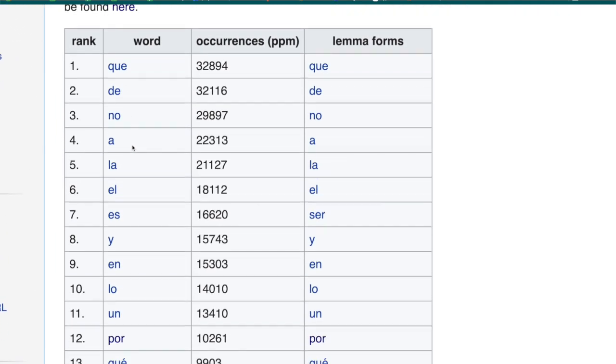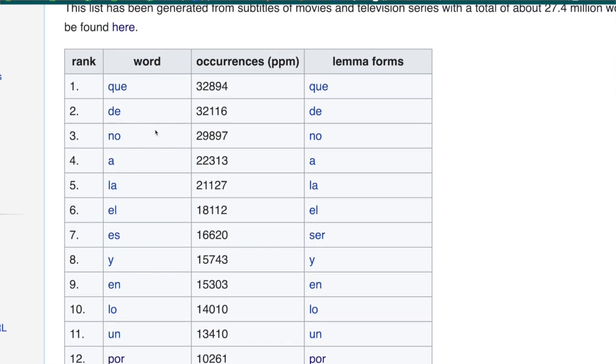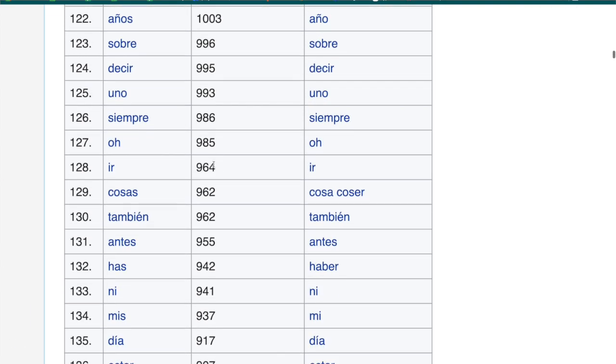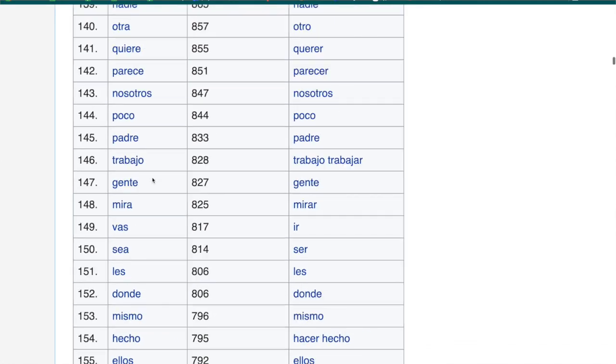If you Google Spanish frequency vocabulary and go to the Wiktionary page, this is where we're getting our data. So you can see words in priority order. We have que and de at the top. In this column, you can see the parts per million. So you just knock off a few, you move the decimal point and you get this is 3% and then this is also more than 3%. So then you scroll way down and the numbers go way down because these words are less and less frequent in the language.